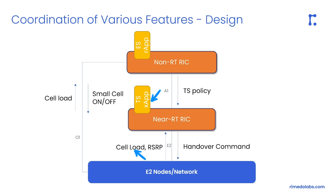The energy saving RAP sends two types of control messages. Firstly, it sends traffic steering policies through the A1 interface to the XApp, and secondly, it sends control messages through the O1 interface to turn off cells.